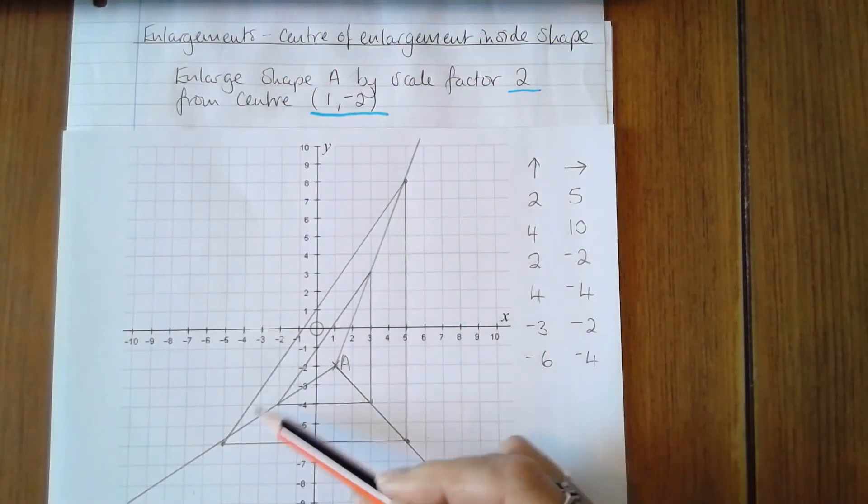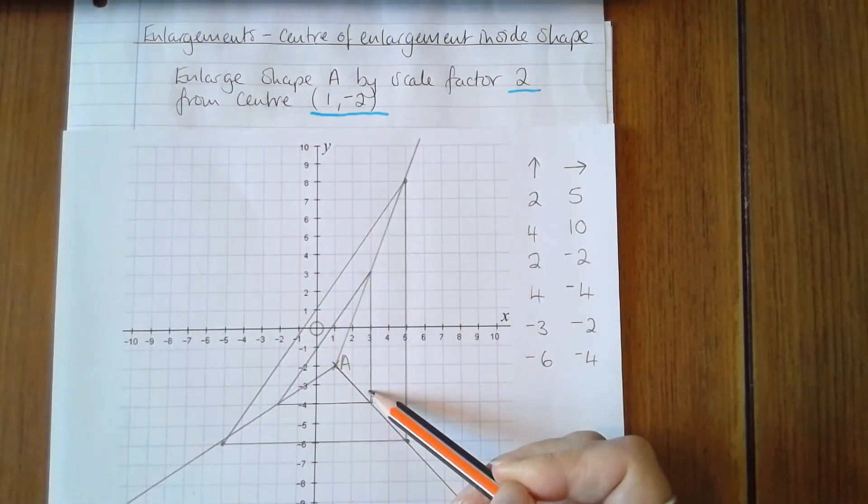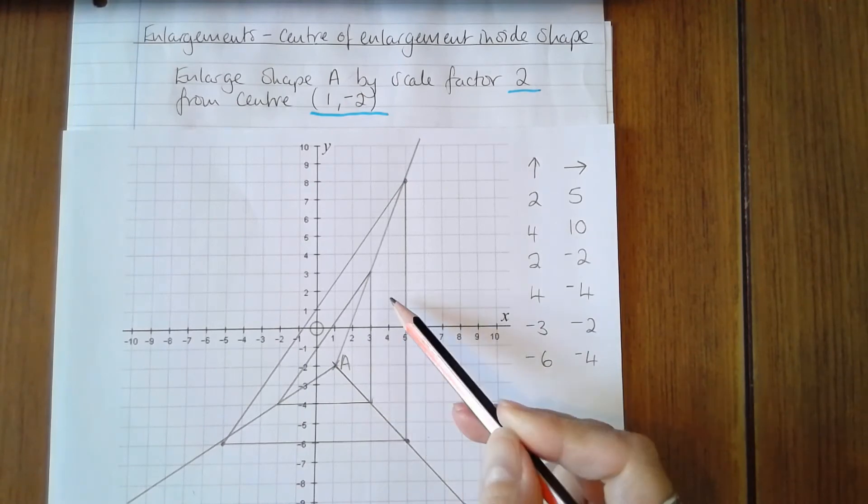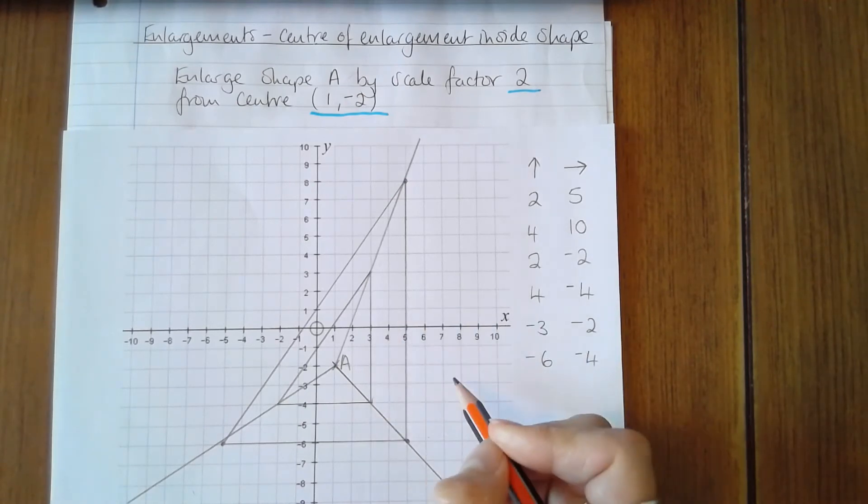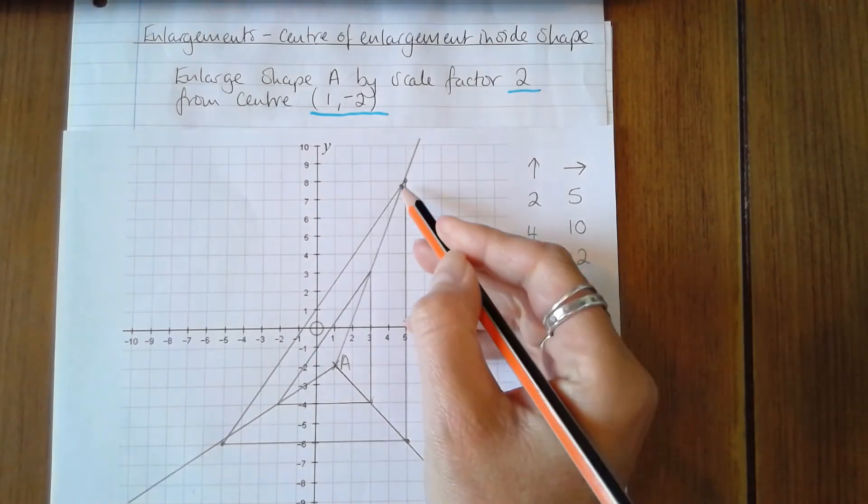And you can see that the new shape is the same shape as the original but just larger. So it's definitely an enlargement and all of the points are on the grid line.